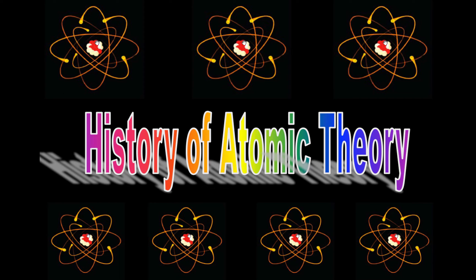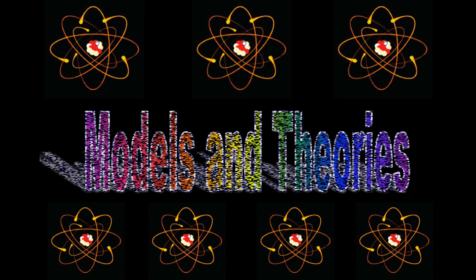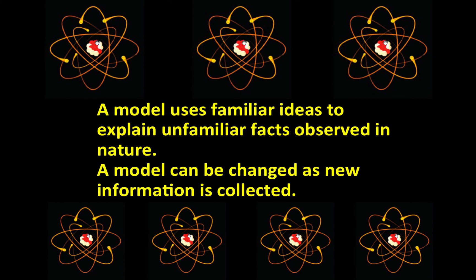The development of the modern atomic theory is an extremely important concept in chemistry. A theory is a well-established explanation of some aspect of the natural world based on a body of facts that have been repeatedly confirmed through observation and experiment. A model uses familiar ideas to explain unfamiliar facts observed in nature. A model can be changed as new information is collected.